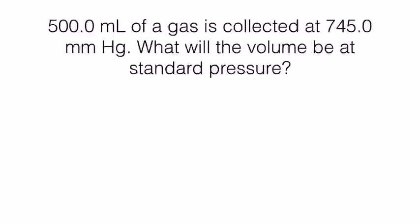First, identify the variables we're dealing with so we know which law we are looking at. This law has volume, 500 milliliters, that's a unit of volume, collected at 745 millimeters mercury, that's pressure. Volume and pressure go together in Boyle's Law. So this is going to be Boyle's Law.